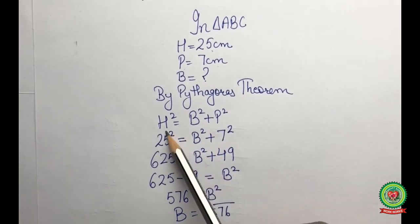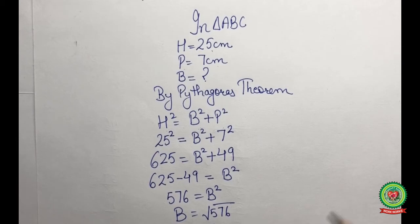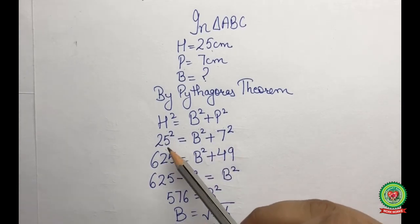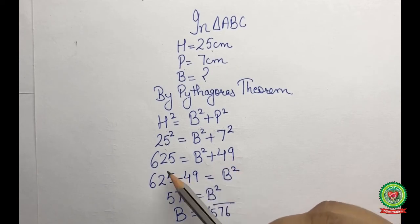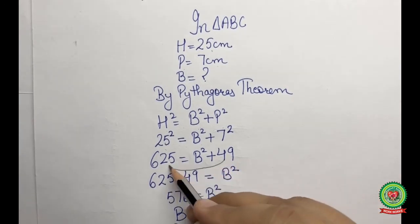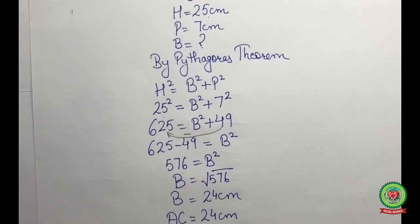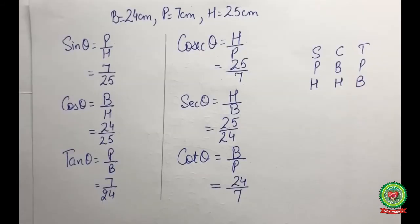In triangle ABC, h = 25, p = 7 cm, and we need to find base. Applying the Pythagorean theorem: h² = b² + p², so 25² = b² + 7², giving 625 = b² + 49. Therefore b² = 625 − 49 = 576, and b = √576 = 24. So AC = 24 centimeters.